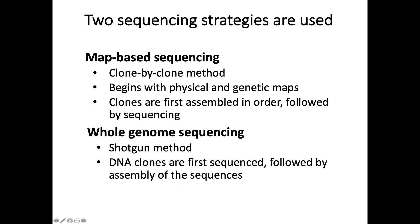To manage this process, two sequencing strategies were used. The first is called map-based sequencing, also known as the clone-by-clone method. The second is called whole genome sequencing, also known as the shotgun method. Both methods were used in the Human Genome Project.